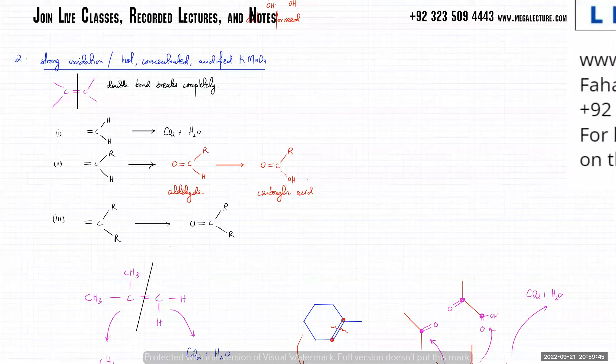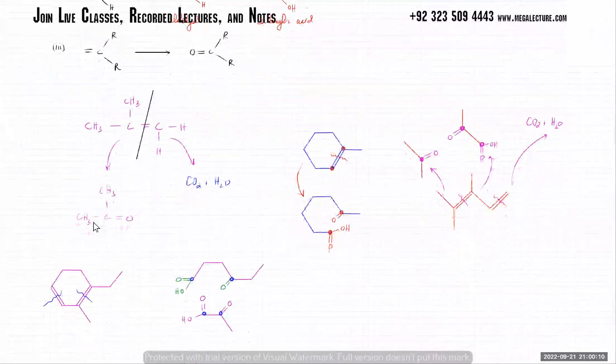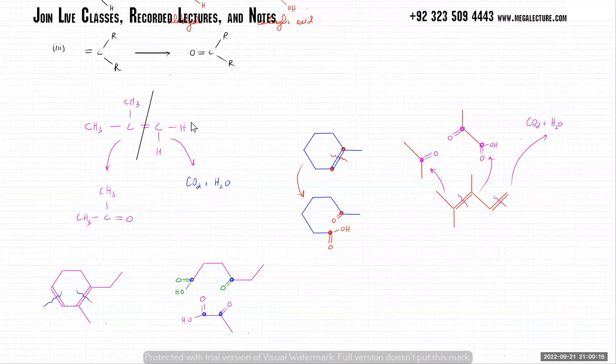When the double bond completely breaks, you've got three scenarios. One is that the carbon has two hydrogens attached to it - that means it will turn into carbon dioxide and water. The second scenario is that the carbon has a carbon chain and an H - that particular double-bonded carbon will turn into a carboxylic acid. The third scenario is that the double bond has two carbon chains - that carbon will turn into a ketone once the double bond breaks. For example, a carbon with two H's will turn into CO2, and a carbon with two carbon chains will turn into a ketone.